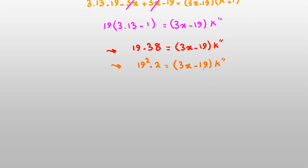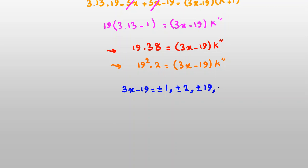We check all divisors of 19²×2. So 3x − 19 can be ±1, ±2, ±19, ±38 (which is 19×2), ±361 (which is 19²), and ±722 (which is 19²×2).